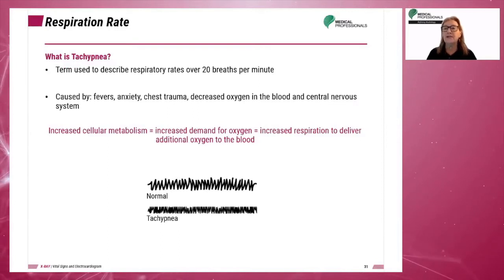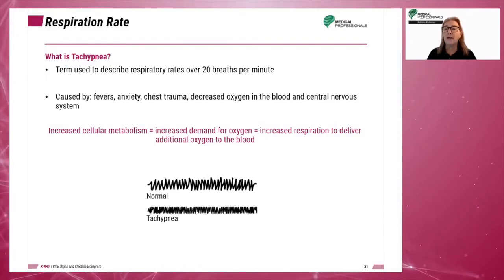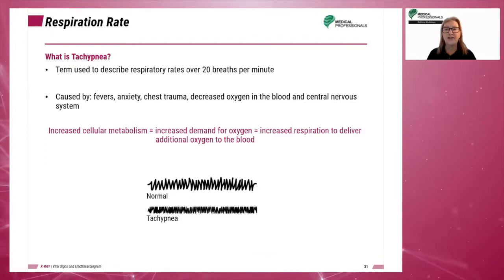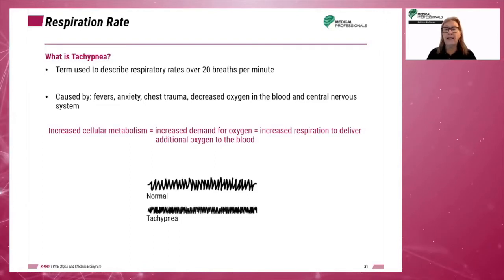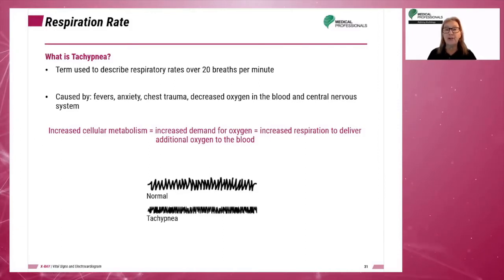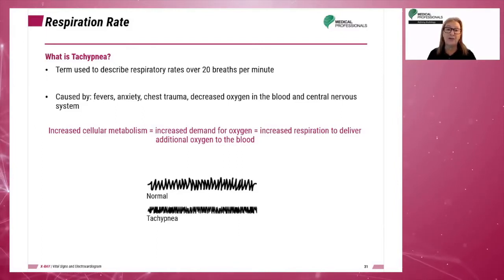Tachypnea is the term used to describe respiratory rates over 20 breaths per minute. It can be caused by fevers, anxiety, chest trauma, decreased oxygen in the blood, and central nervous system conditions. Increased cellular metabolism results in an increased demand for oxygen, leading to increased respiration to deliver additional oxygen to the blood.